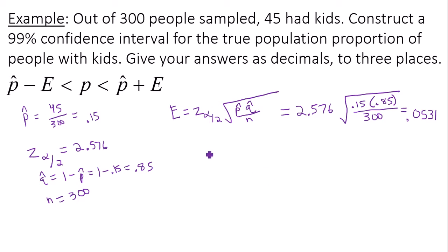So to find the confidence interval, I take my sample proportion and I will subtract my margin of error. So I'll take 0.15 minus 0.0531. It's going to give me 0.097 to three decimal places.